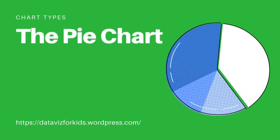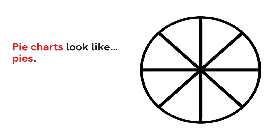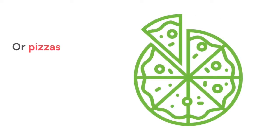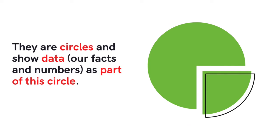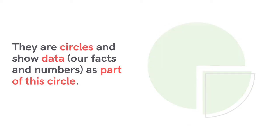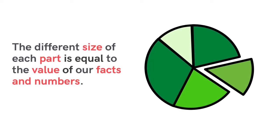Let's learn about pie charts. Pie charts look like pies or pizzas. They are circles and show data — our facts and numbers — as part of this circle. The different size of each part is equal to the value of our facts and numbers.